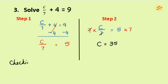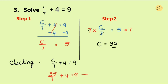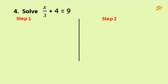Let's check by writing the equation: c over 7 plus 4 equals 9. Substitute c equals 35: 35 over 7 plus 4 equals 9. Following the order of operations, division comes before addition, so divide 35 by 7, giving 5. Then 5 plus 4 equals 9, and the right-hand side is also 9. So the equation is true for the value of c equals 35.